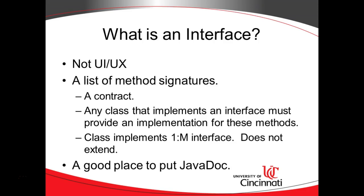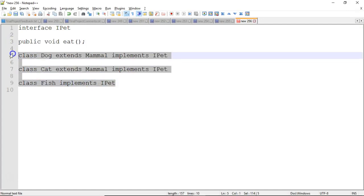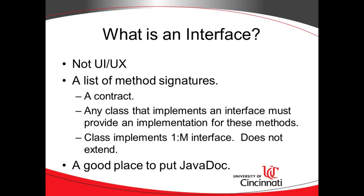Because classes will implement an interface, many times we will put Javadoc — some comments — on the interface and the methods of the interface itself. When we do that, we can simply reference that Javadoc from the implementing classes. We don't necessarily have to repeat the Javadoc unless there's something materially different in that class from what the Javadoc indicates on the interface.